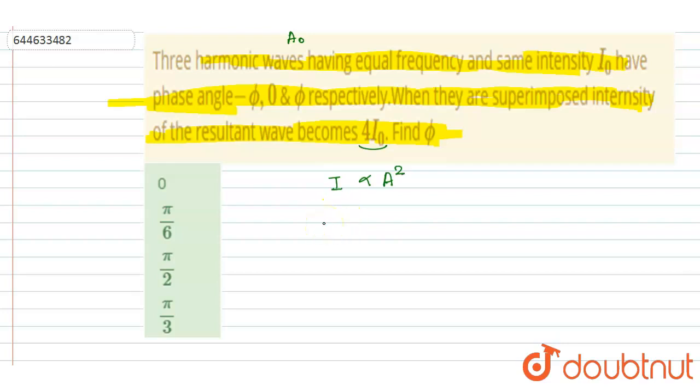Right, so if I say this is I₀, if the intensity is I₀, amplitude is A₀. Then if the intensity is 4I₀, the amplitude will be 2A₀ since it is directly proportional to this.